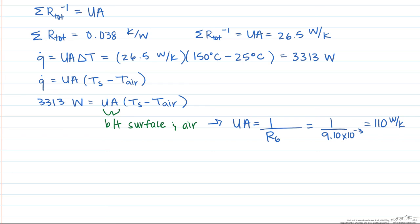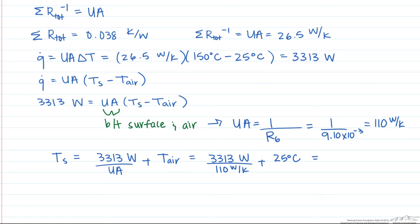We rewrite our equation such that the surface temperature is equal to the heat rate divided by the UA, which we just calculated, plus the temperature of the air. The surface temperature is therefore equal to 55 degrees Celsius.